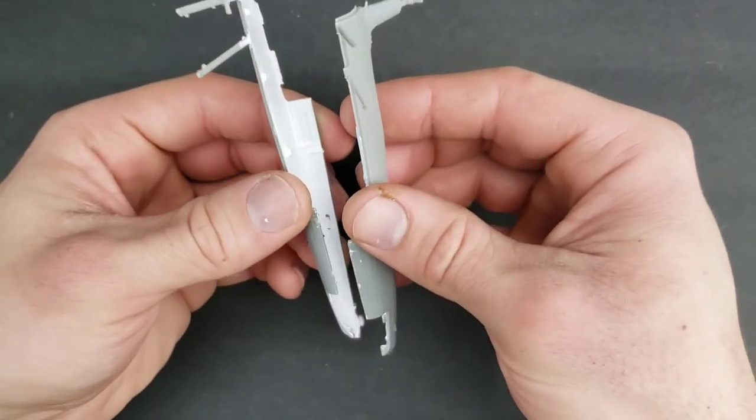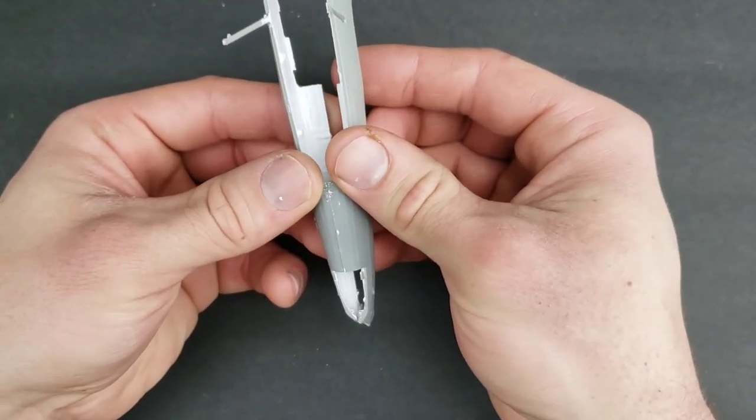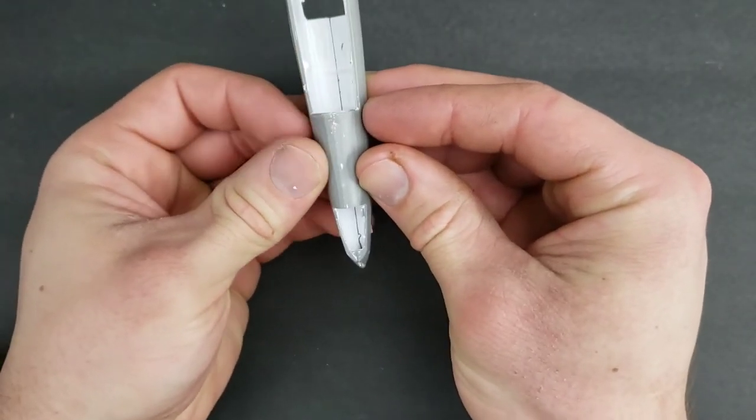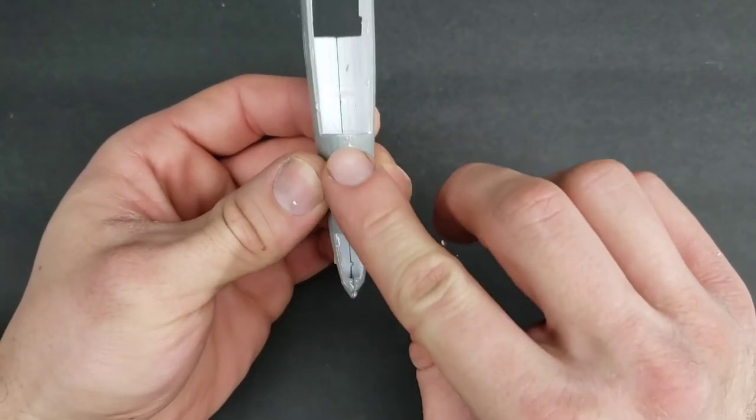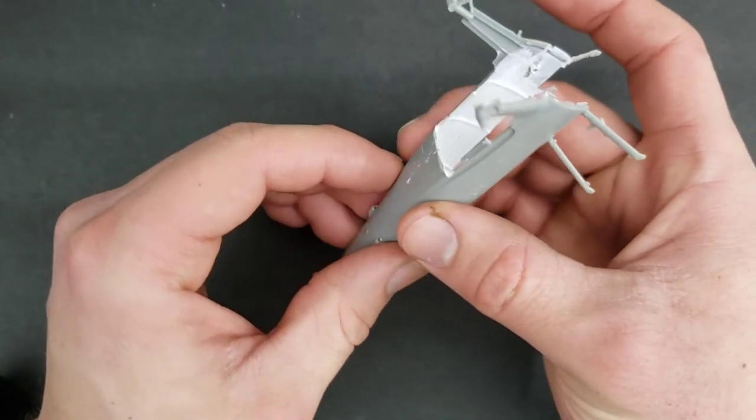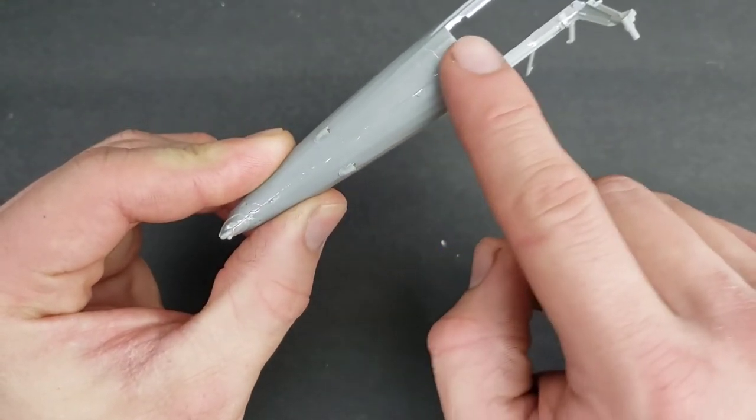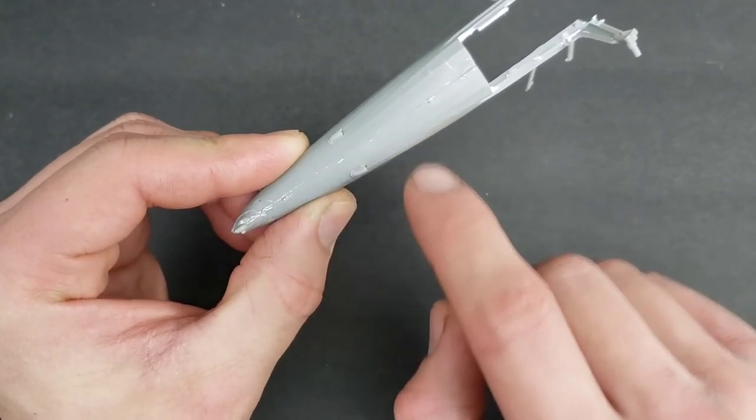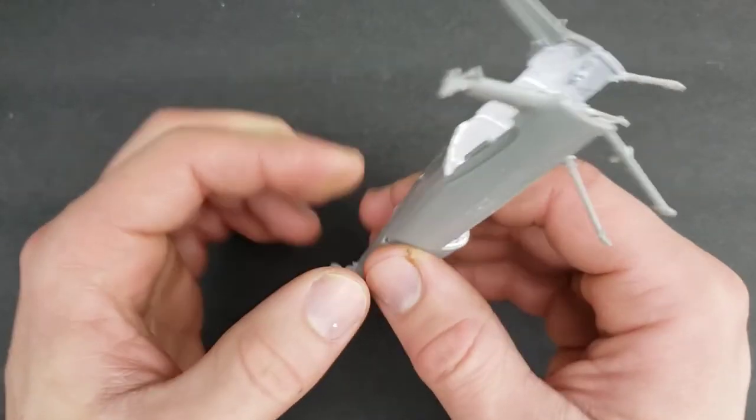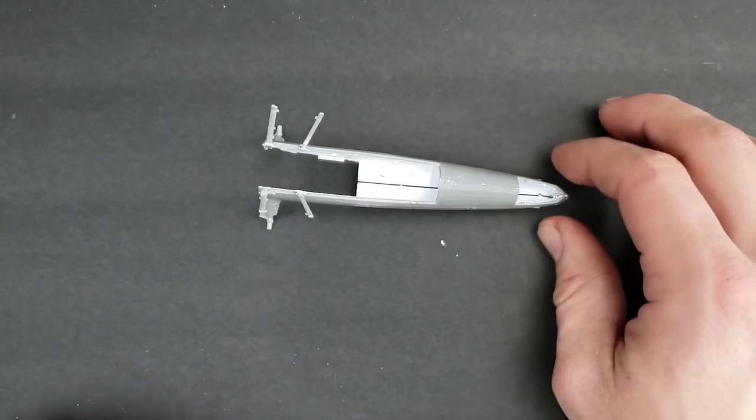These two halves, the next step you're going to want to do is definitely check how well these halves fit before you glue it in. We're not going to glue it in today, but check your halves before you even put the cockpit in because that's the most important part.